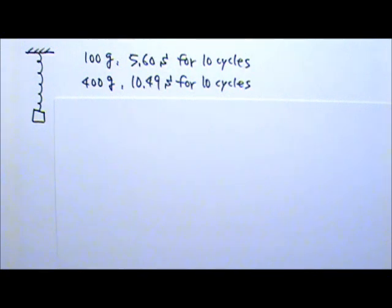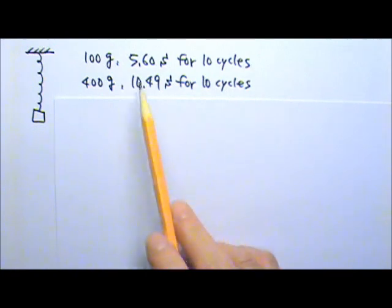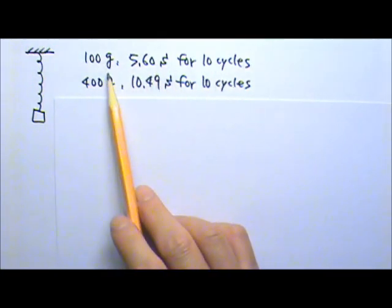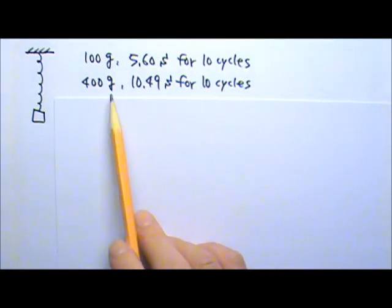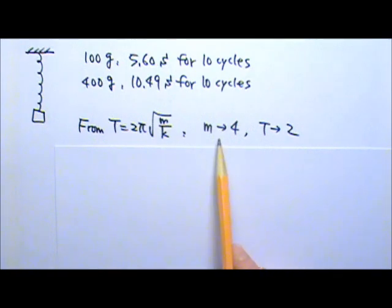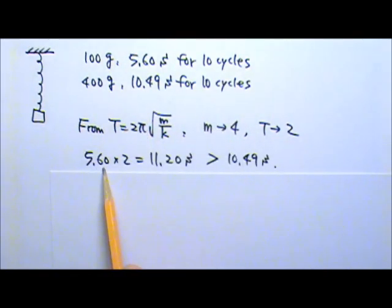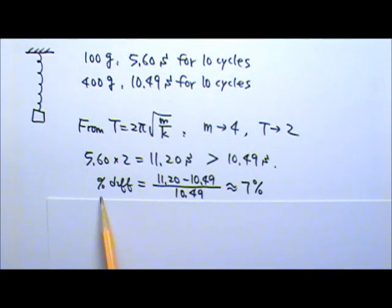Now I will go watch the video and measure the period. It's nice to have videos to use for the measurement of time — I can get much more accurate data than using a stopwatch, because I don't have to deal with reaction time or errors caused by judging when the mass reaches the endpoint. I got 5.6 seconds for 10 cycles for the 100g mass, and 10.49 seconds for 10 cycles for the 400g mass. From the period equation, when the mass quadruples, the period should double. If I double 5.6 seconds, I get 11.2, which is more than 10.49 seconds — a percentage difference of about 7%.